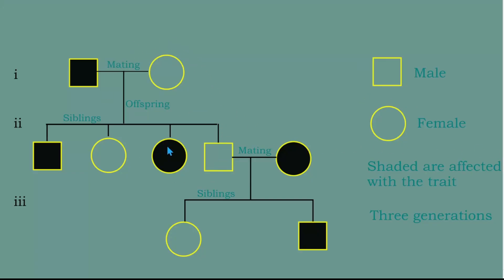This diagram on your screen is one example of a pedigree. A pedigree is a diagram of family history that uses standardized symbols. A pedigree shows relationships between family members and indicates which individuals have a certain trait. Pedigrees are used to investigate traits in family trees.